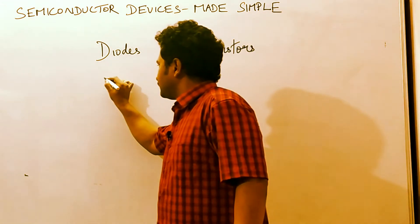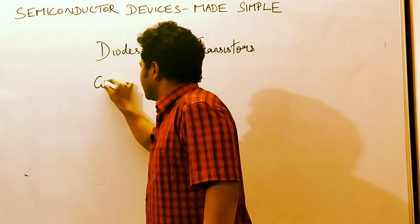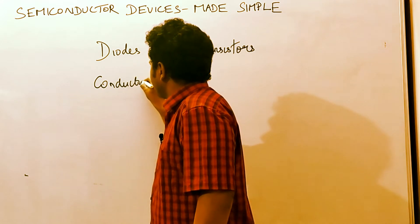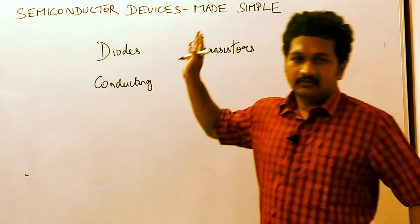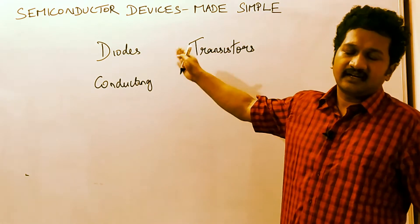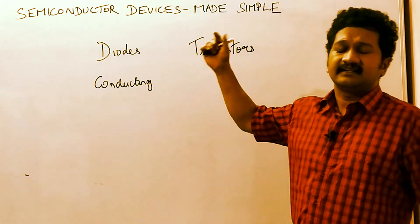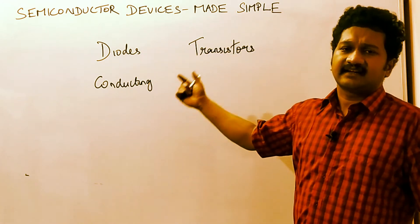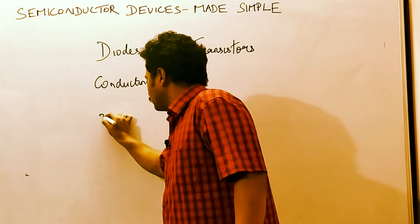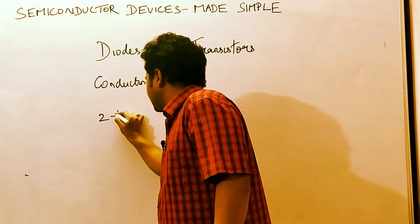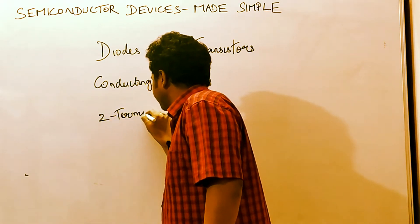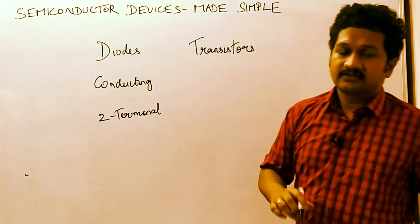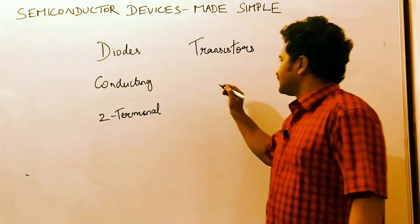What is a diode? A diode is a conducting device — the job a diode does is conducting. It is a two-terminal device which conducts current.